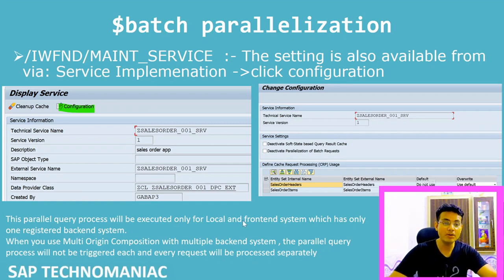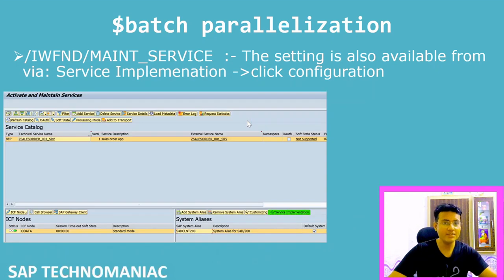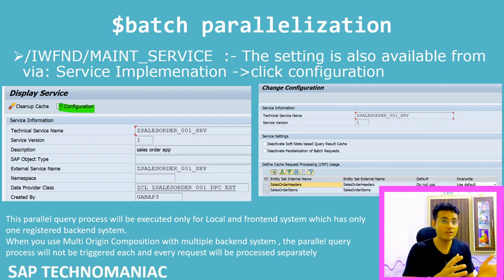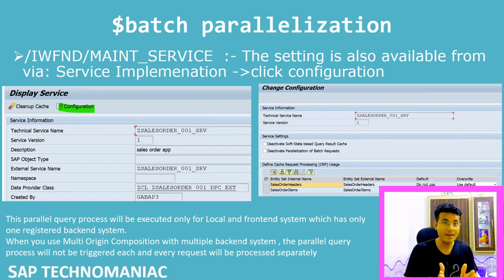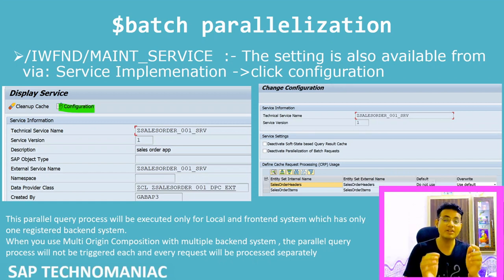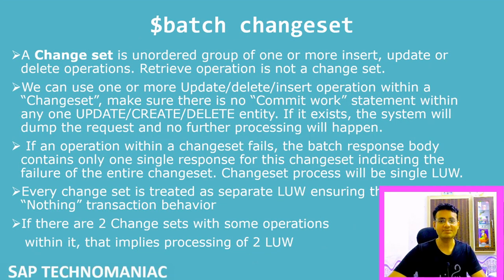One more important point: parallel query processing will only work for local and front-end systems that have only one registered backend system. In the Maintain Service transaction you can define multiple systems to get data from — that is called Multi-Origin Composition. If your service uses Multi-Origin Composition, getting data from both CRM and ECC simultaneously, then parallel processing will not work for those queries.